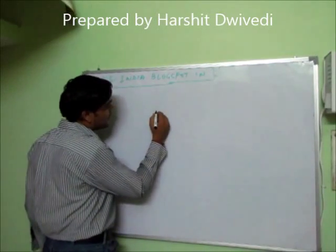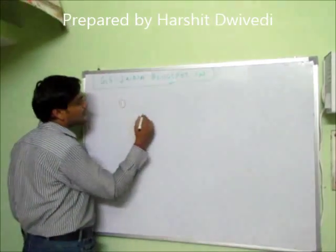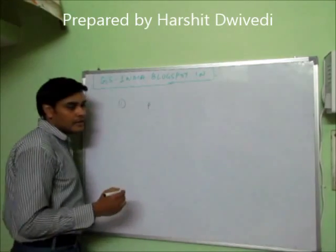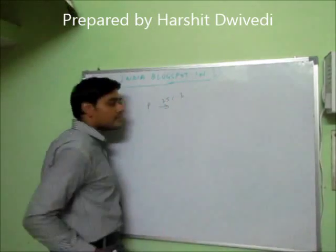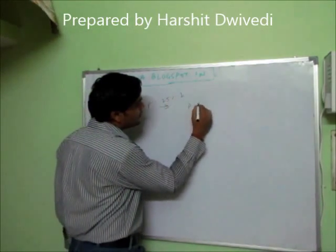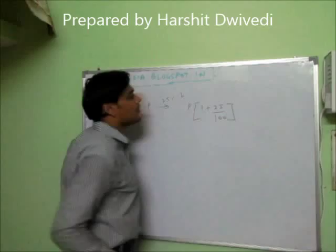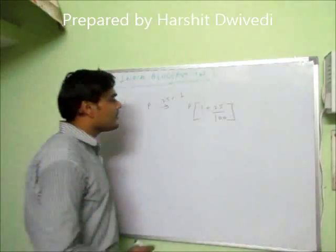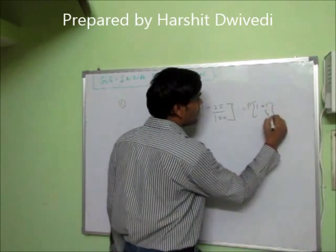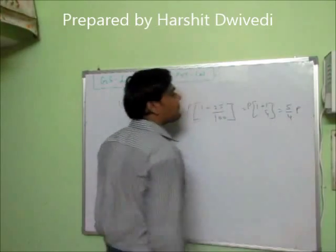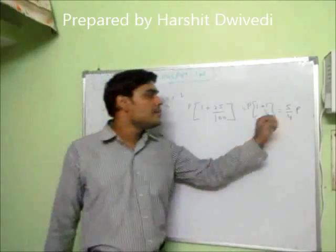The question says that the price of petrol has increased by 25%. So suppose the price of petrol is P and it has increased by 25%. So how much will it become? It will become P into 1 plus 25 by 100, which is P into 1 plus 1 by 4, which becomes 5 by 4 P. That is, the initial price of petrol was P rupees per litre and finally it became 5 by 4 P.